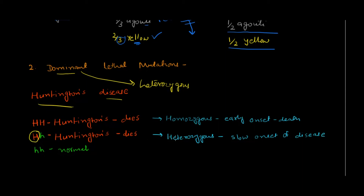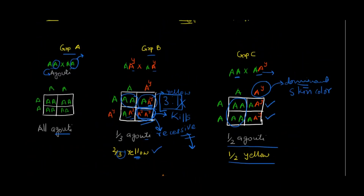In Huntington's disease, even one mutated allele in heterozygous condition gives rise to the disease. If present in homozygous condition, the onset of disease is comparatively much earlier in life and results in earlier death. In heterozygous condition, disease onset is slower.